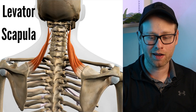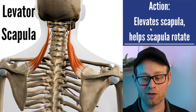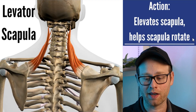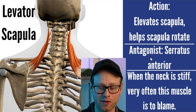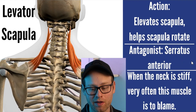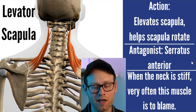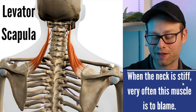The next muscle is levator scapula — an easy one because it pretty much does exactly what it sounds like. It elevates your scapula and also rotates it, kind of as you're reaching your arm upwards. In terms of antagonists, serratus anterior would be one. When the neck is stiff, this muscle is very often to blame — maybe someone is doing a lot of overhead work or reaching forward and overhead, but general postural issues could cause problems here too.